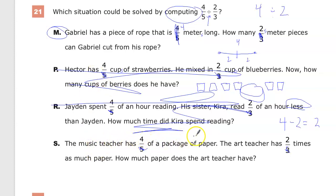A music teacher has 4 packages of paper. The art teacher has 2 times that much paper. How much paper does the art teacher have? Well, 8 packages of paper. Or in this world, you do 4 fifths times 2 thirds. Again, you don't need to know that. You just need to know the concept.